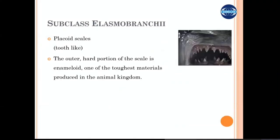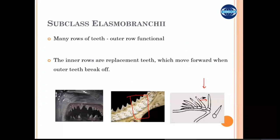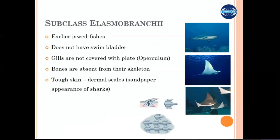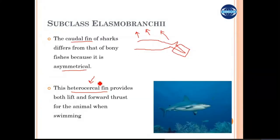To summarize Elasmobranchii: the mouth points downward (ventral). Sharks have a well-developed jaw with placoid scale-like teeth arranged in multiple layers that replace missing teeth. Gills are open, not covered by an operculum. Circulation is simple with a two-chambered heart and five to seven gill slits. No swim bladder. Caudal fins are asymmetrical (heterocercal). The skin has placoid scales with a tough, rough sandpaper-like appearance.